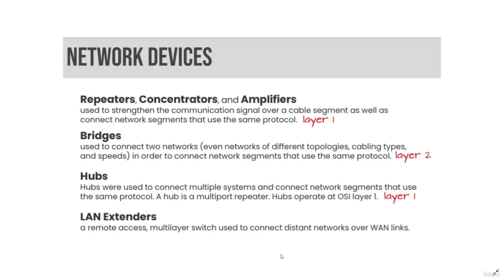Some other common network devices are repeaters, concentrators, amplifiers, bridges, hubs, and LAN extenders. Repeaters, concentrators, and amplifiers are used to strengthen the communication signal over a cable segment and connect network segments that use the same protocol — all operating at layer 1. Bridges are used to connect two networks, even networks of different topologies, cabling types, and speeds, in order to connect network segments using the same protocol. Bridges take place at layer 2.